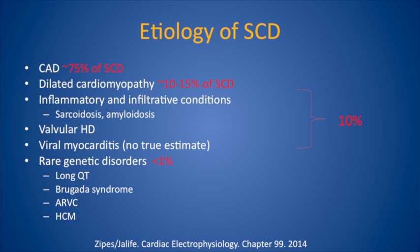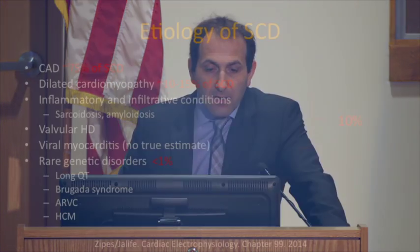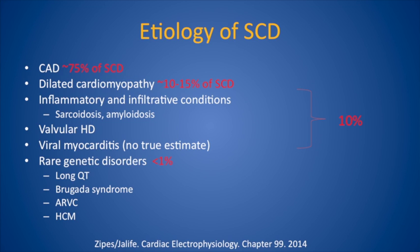Looking at etiology from Dr. Zipes' textbook: CAD causes about 75% of sudden cardiac death — that number varies from about 48% to 80% depending on the study, but roughly 75%. Dilated cardiomyopathy leads to about 10% to 15% of sudden cardiac death.